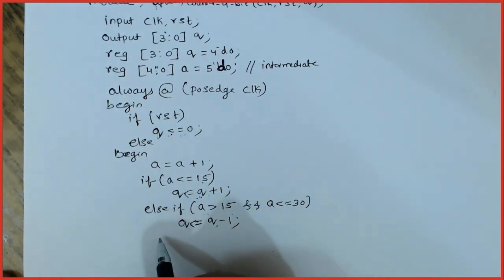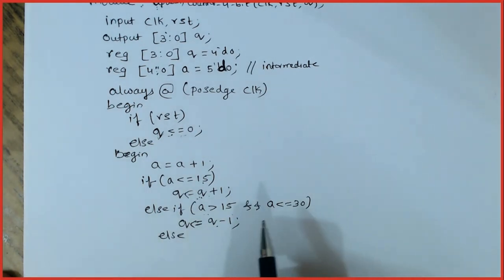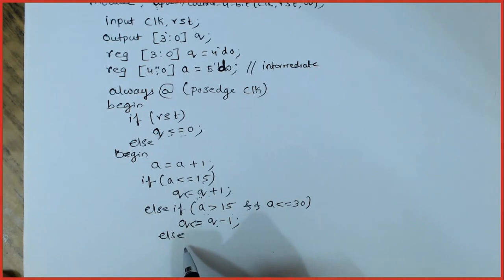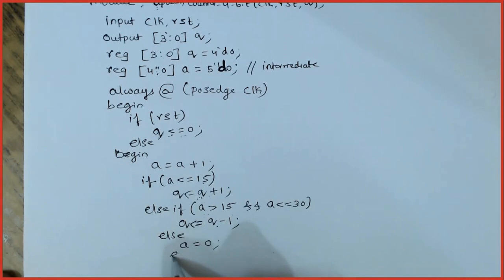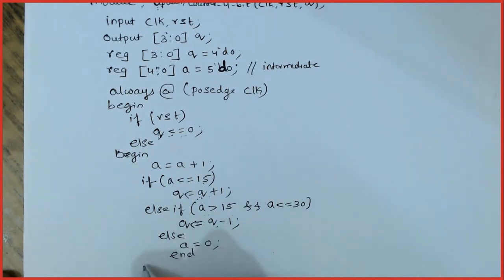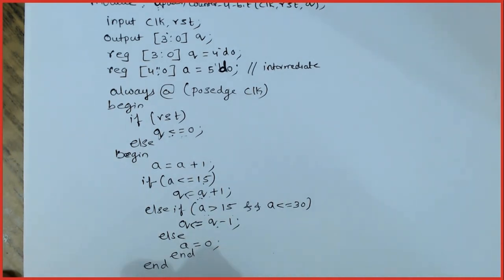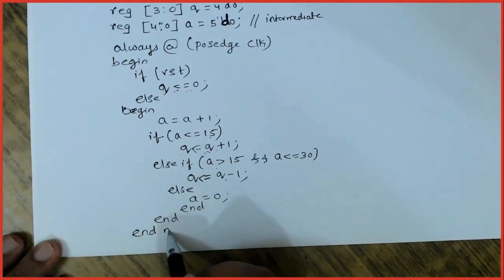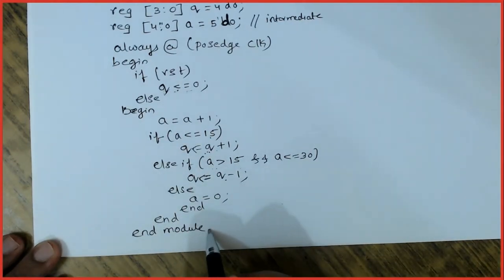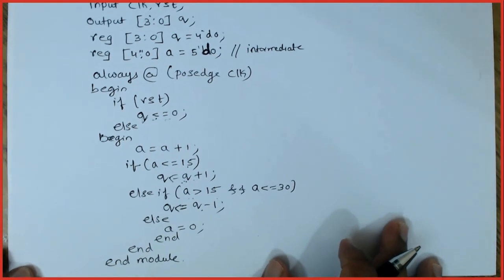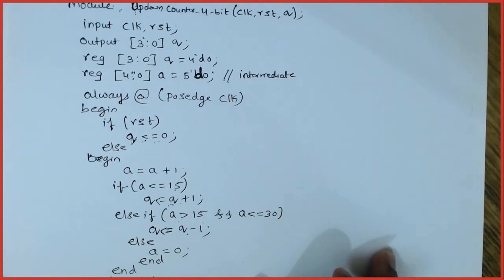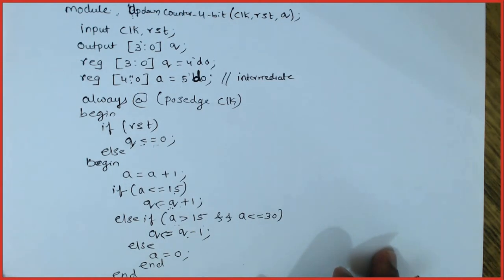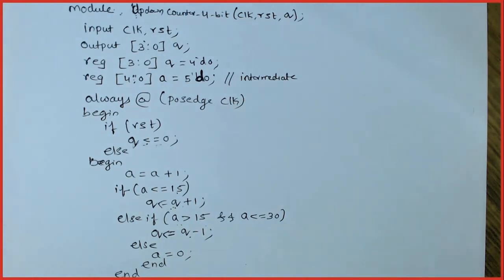The final else case handles when 'a' reaches 31. In that case 'a' should be made 0. Then end the always block and end the module. This completes the code for the 4-bit up-down counter.